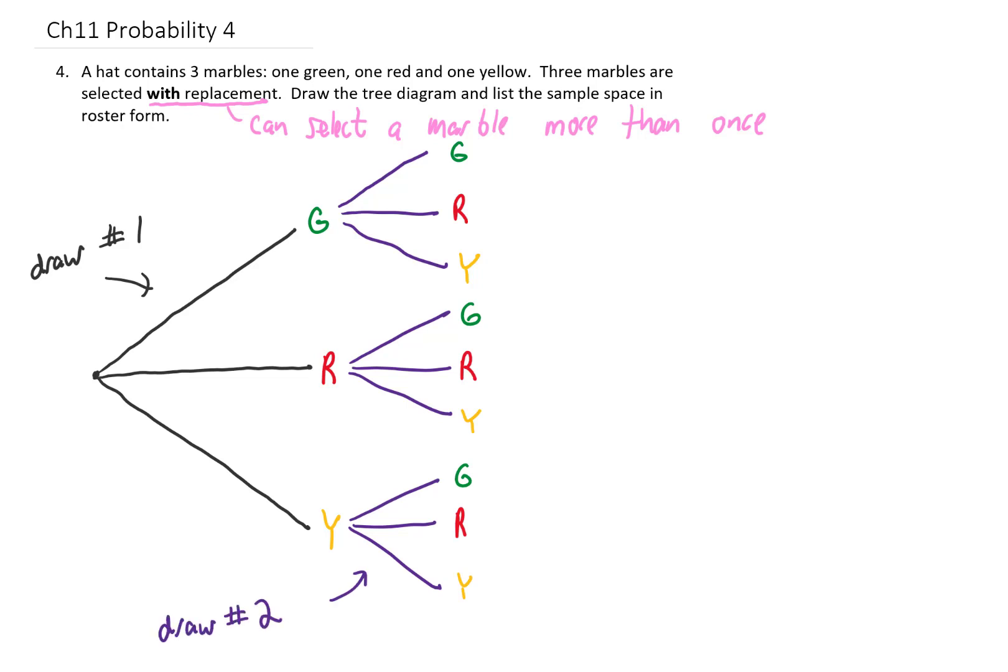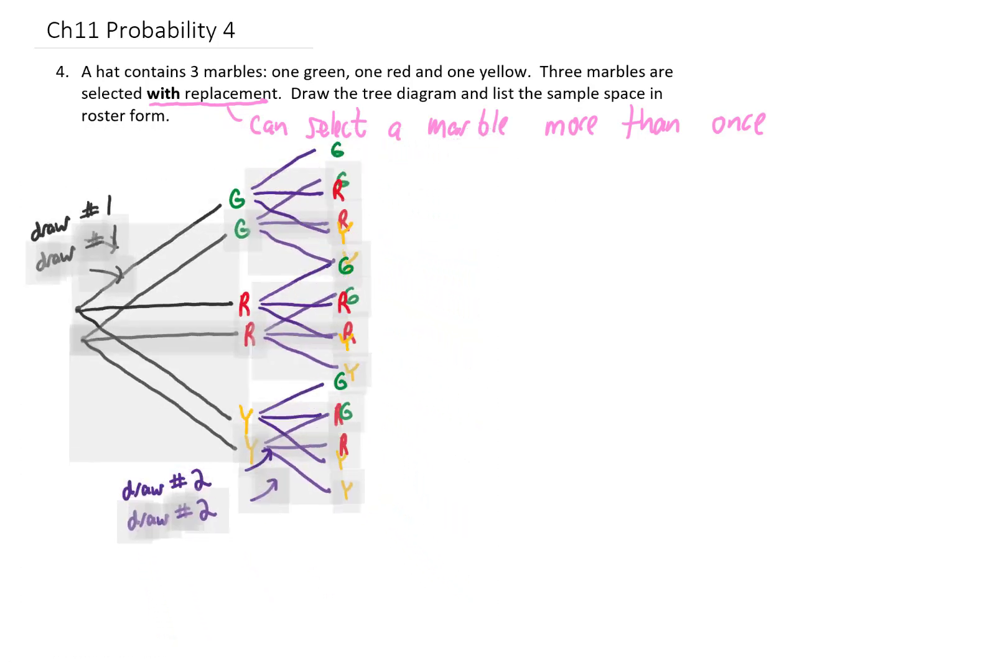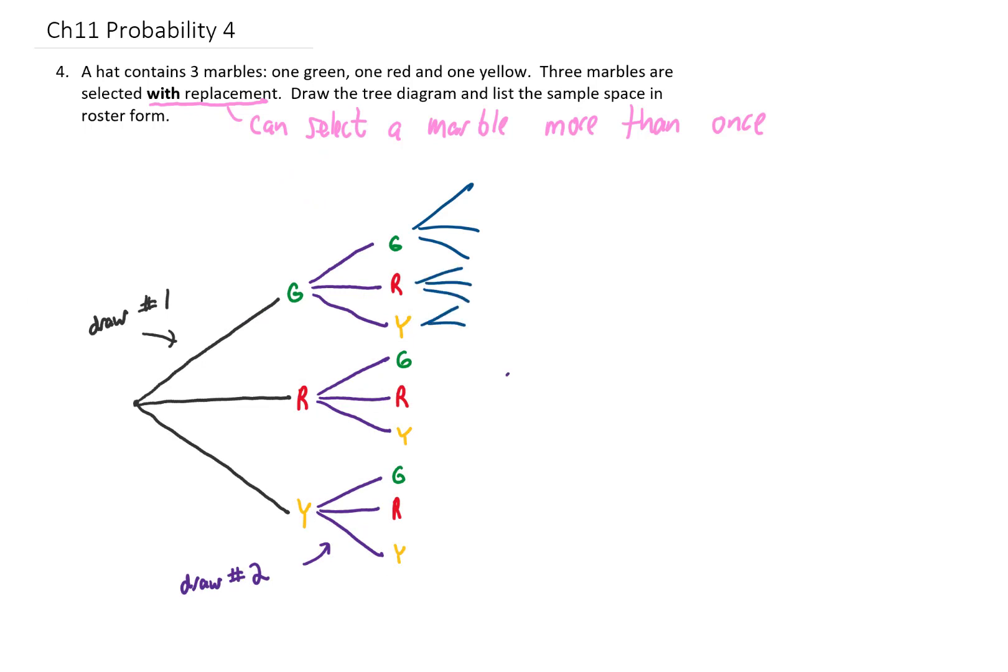That's looking pretty good for two draws, but we need to draw one more marble, so I'm going to shrink this thing down a little bit, create a little bit of space, and for our third draw, no matter what we drew the first two times, we can still draw green, red, or yellow for our third draw.